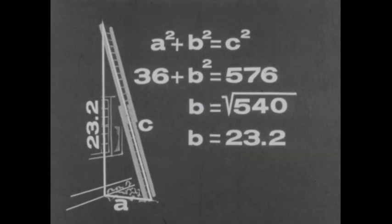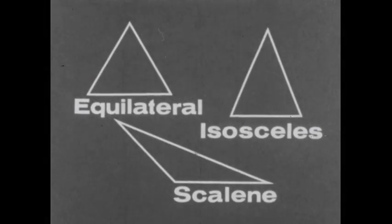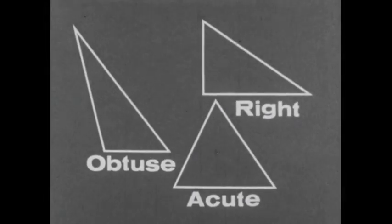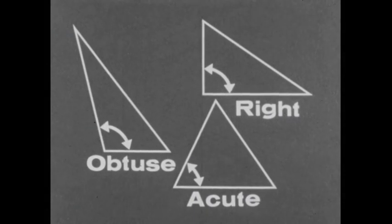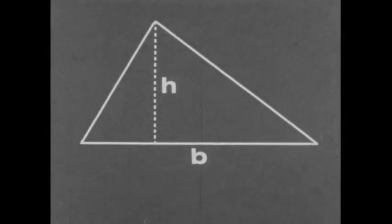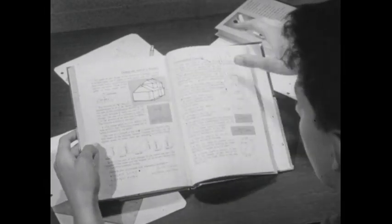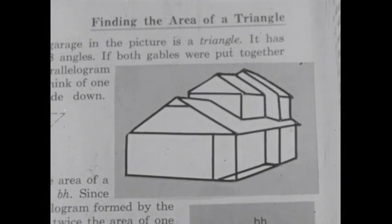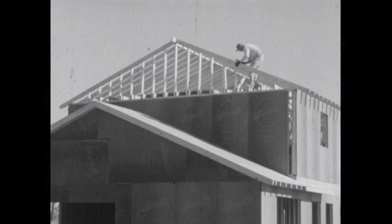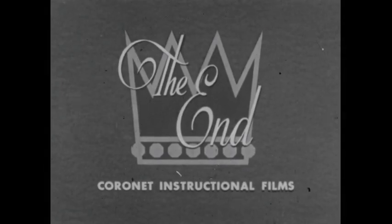How to find the length of an unknown side of a right triangle is just one of the important things we have learned about triangles. We have also seen that triangles can be identified according to the measures of their sides or their angles. We learn to find the area of a triangle by using the formula area equals one half the base times the height. As you continue with your study of mathematics, you'll find that the solutions to many kinds of problems depend on your knowledge of triangles.